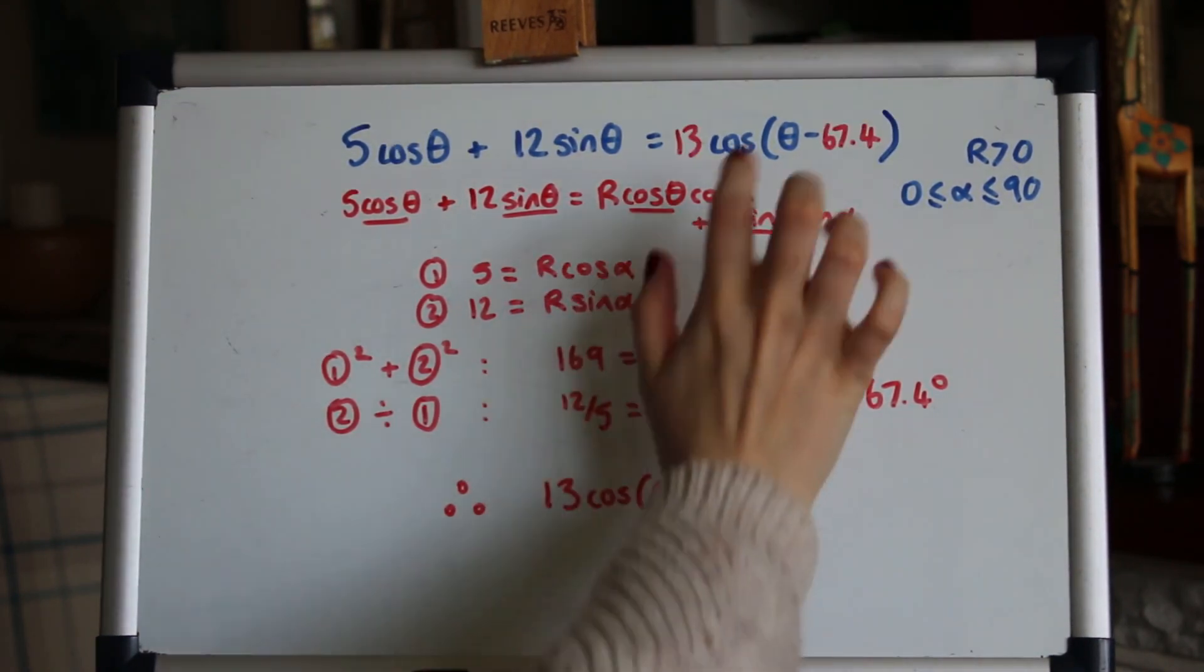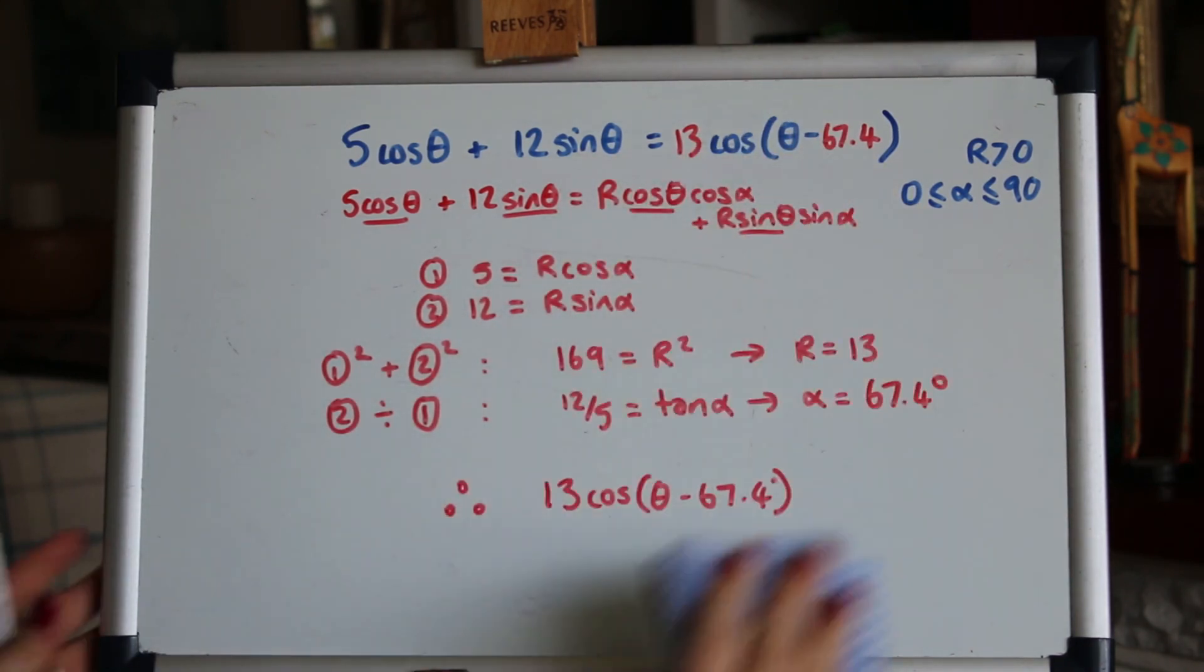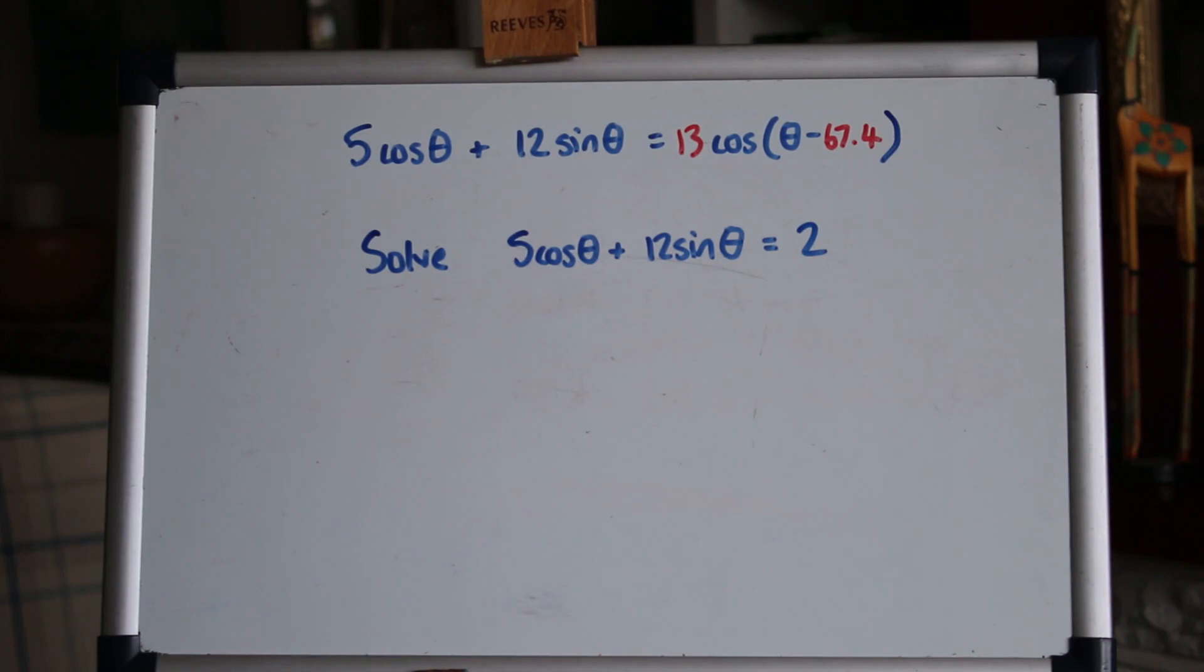Great, so hopefully you got that using the same method as we looked at before. R is 13 and α is 67.4. Okay, we're going to look at a couple more parts of this question.